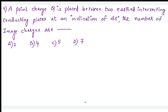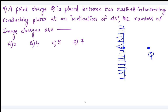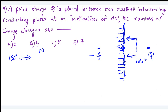Suppose we have two planes, one on the positive axis and one on the negative axis, both grounded, inclined at 180 degrees. If you place one positive charge, it creates one image charge on the other side. So for two planes inclined at 180 degrees, total charges equal 2 and image charges equal 1.